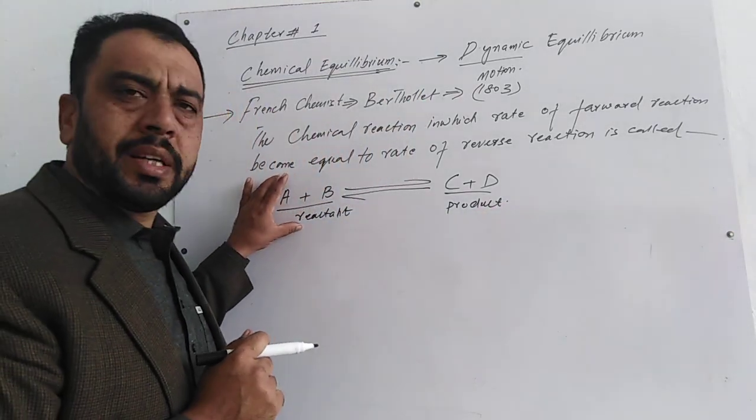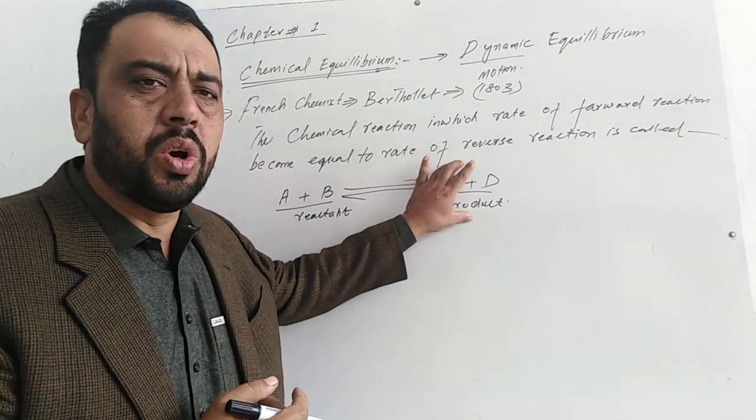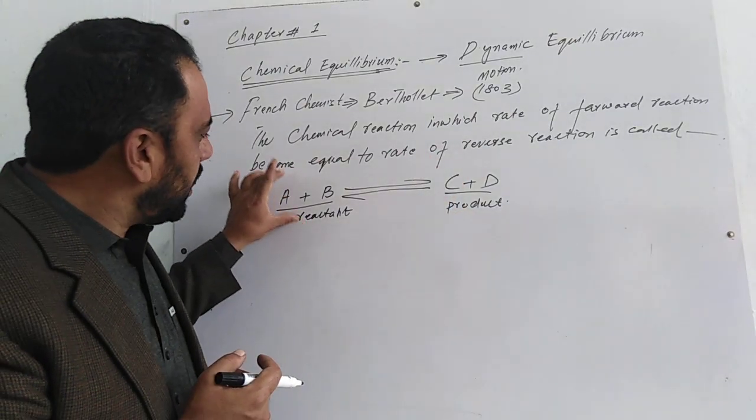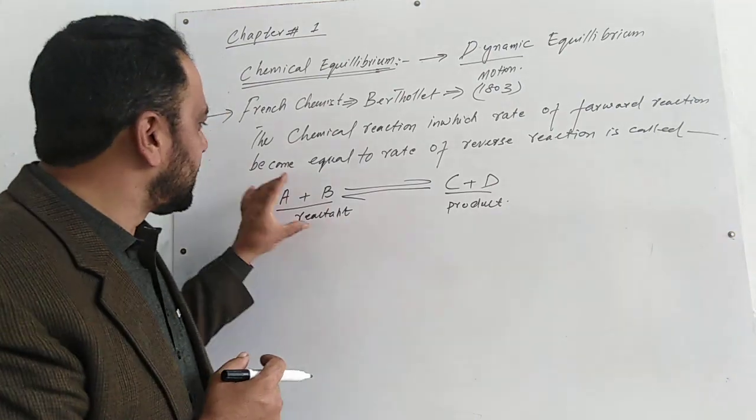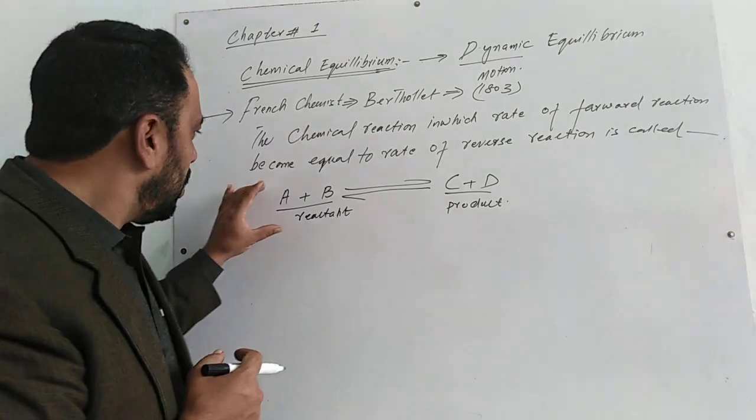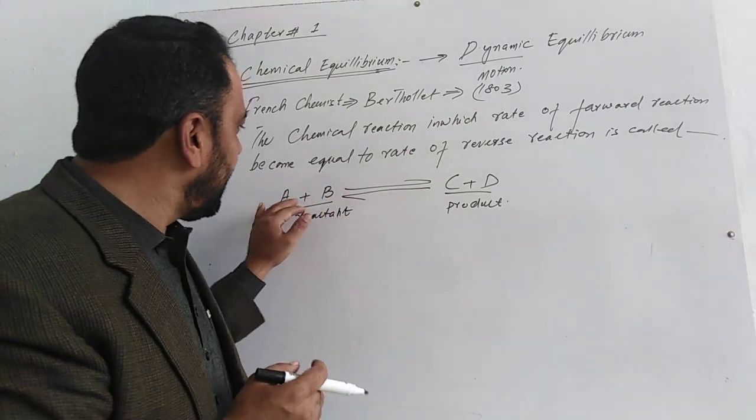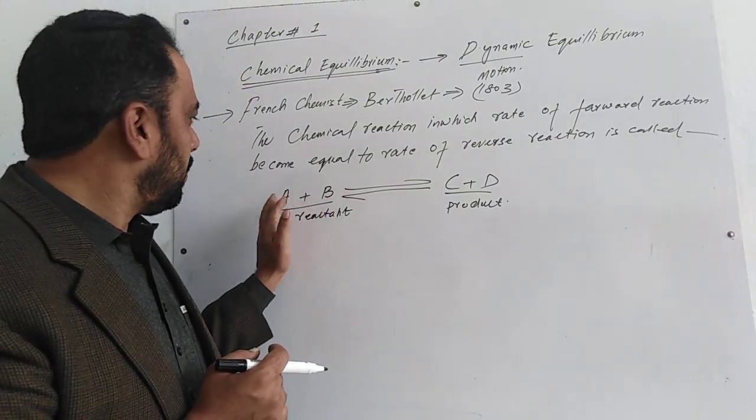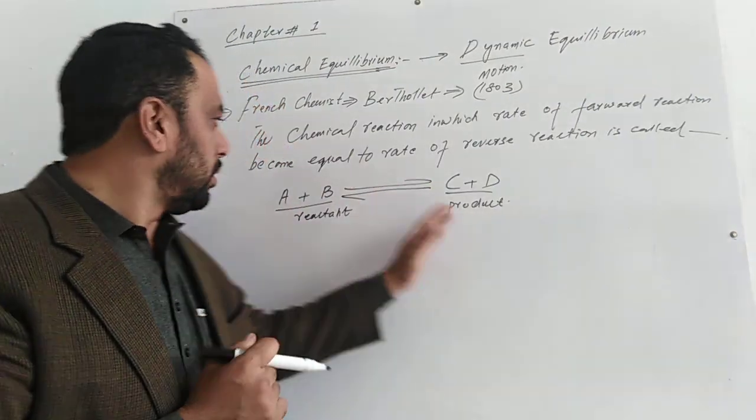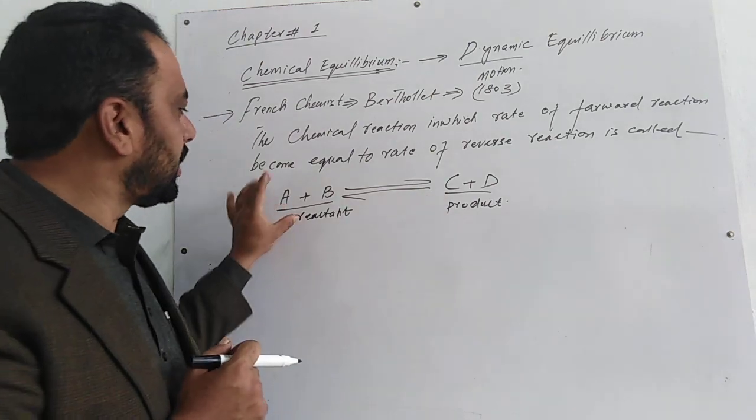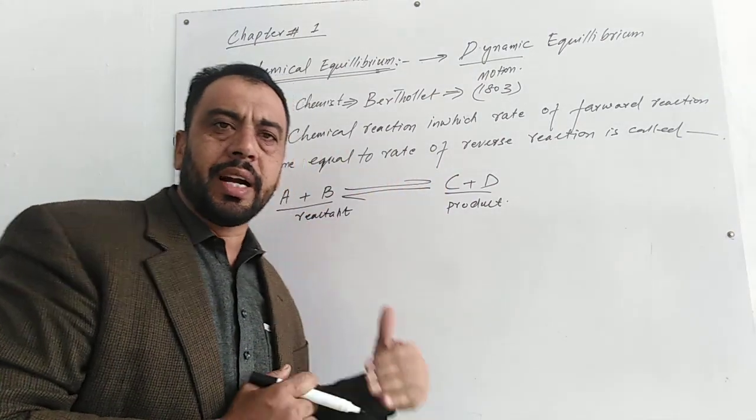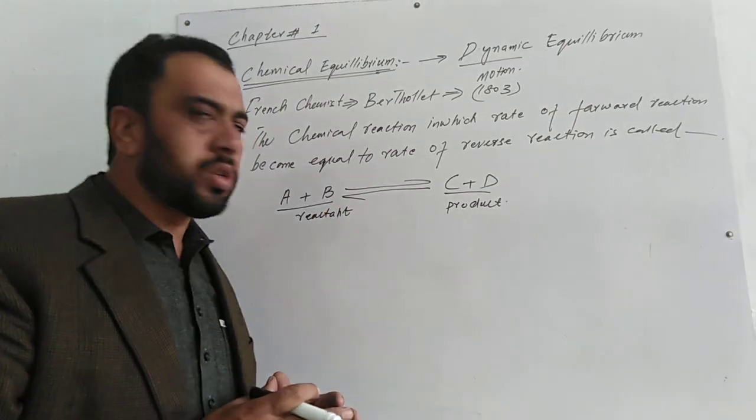But with time passing, the amount of reactant will decrease and products will increase. A time will come when reactants will be 50% and products will be 50%. When this interconversion happens between reactant and product in continuous motion, we call it chemical equilibrium.